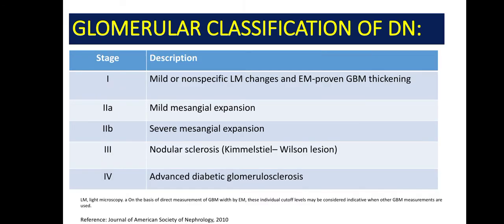Now, coming to the glomerular classification of diabetic nephropathy. Stage 1 is glomerular basement membrane thickening, which can be seen by light microscope or electron microscope. Stage 2 is mesangial expansion: if it's mild it's stage 2a, if it's severe it's stage 2b. Stage 3 is nodular sclerosis, also known as Kimmelstiel-Wilson lesion. And stage 4 is advanced diabetic glomerulosclerosis.